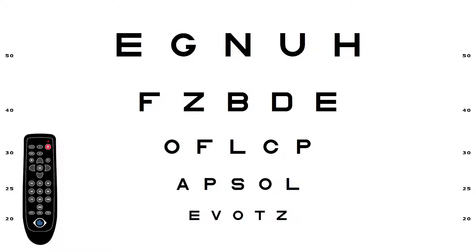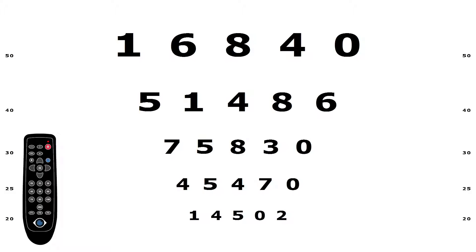The OptoType button on the remote will cycle through the various OptoTypes available. For example, if you have the home screen displayed, you can press the OptoType button to change from letters to numbers. Pressing the OptoType button again will change the OptoTypes to pediatric images.